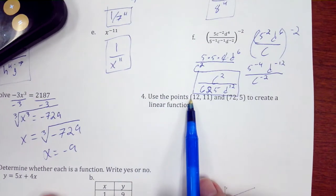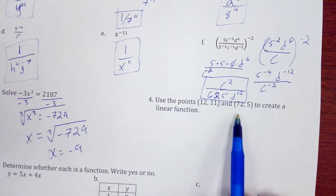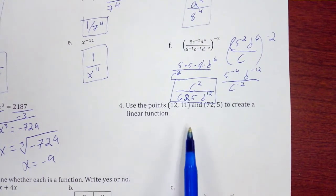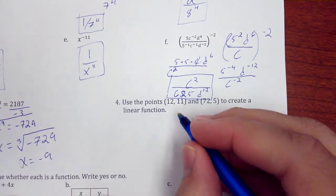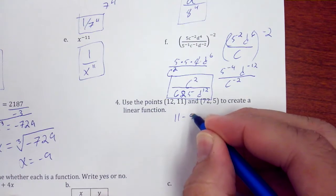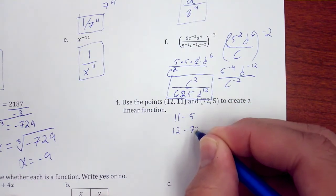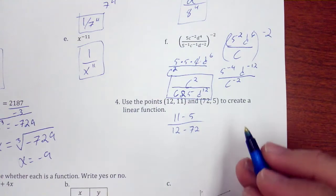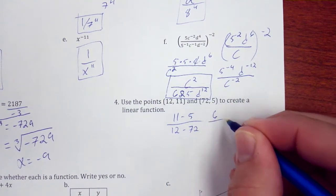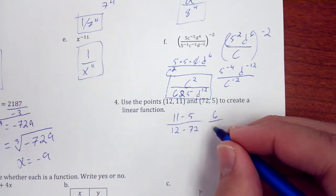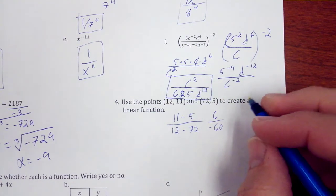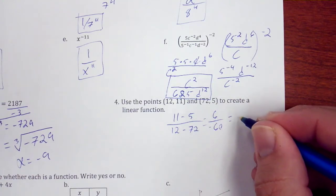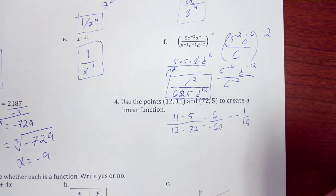Okay, use the points (12, 11) and (72, 5) to create a linear function. I'm going to go 11 minus 5, and 12 minus 72, giving me 6 over negative 60, giving me a slope of negative 1 over 10.